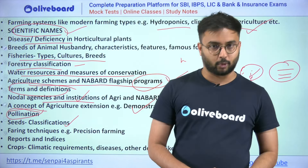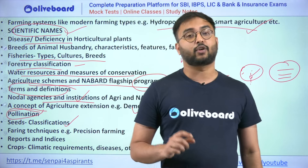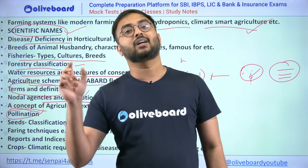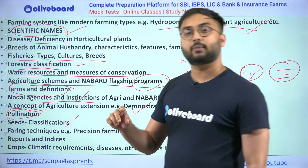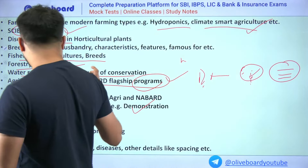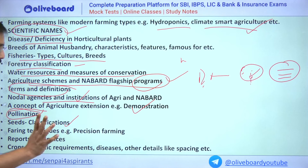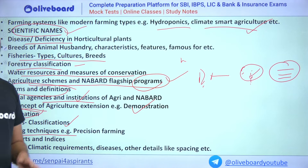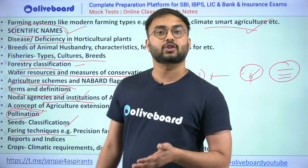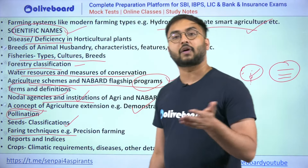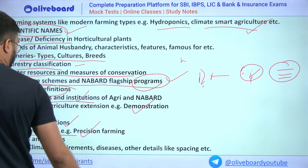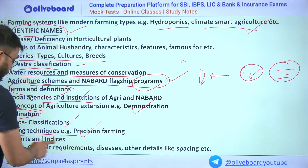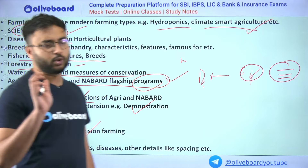Seeds classification is very important. In certification, know the classes: Nucleus seed — what is the color of its certificate and what is its genetic purity? What is the genetic purity and certification color of registered seed? These are very important questions. Farming techniques such as organic farming, precision farming, hydroponics, and aeroponics can also be asked. All the reports and indices previously listed are very, very important — go through them in depth.